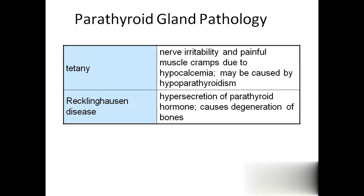Parathyroid gland pathology: tetany means nerve irritability and painful cramps, caused by hypocalcemia due to hypoparathyroidism. If parathormone decreases, calcium levels in the blood also decrease. Recklinghausen's disease is quite the opposite - hypersecretion of parathormone causes disintegration of bones. Continuously, parathormone stimulates bones to release calcium into the blood, so the bones become very weak.